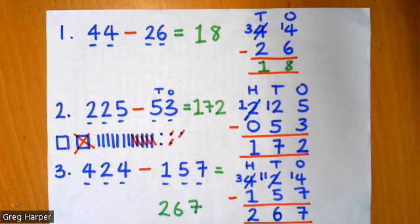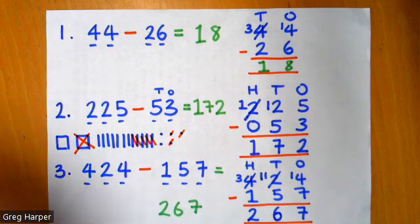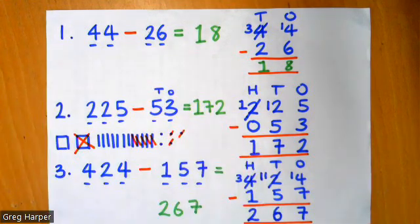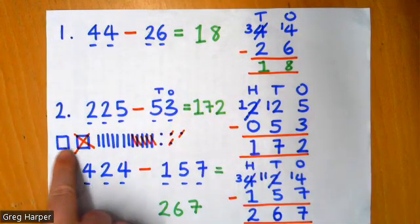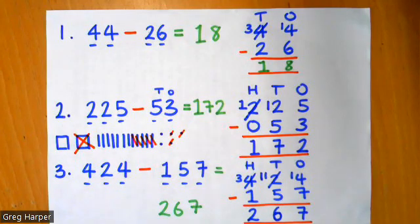So, three strategies, very similar, just different ways of showing the same approach. Column subtraction with exchanging. Every single one of these works perfectly well. The physical resources are great. The concrete method is excellent. The pictorial method of drawing and then removing is also excellent. And the abstract method of just doing it more mentally is also correct. All of these methods work. It's up to you which one works best for you.